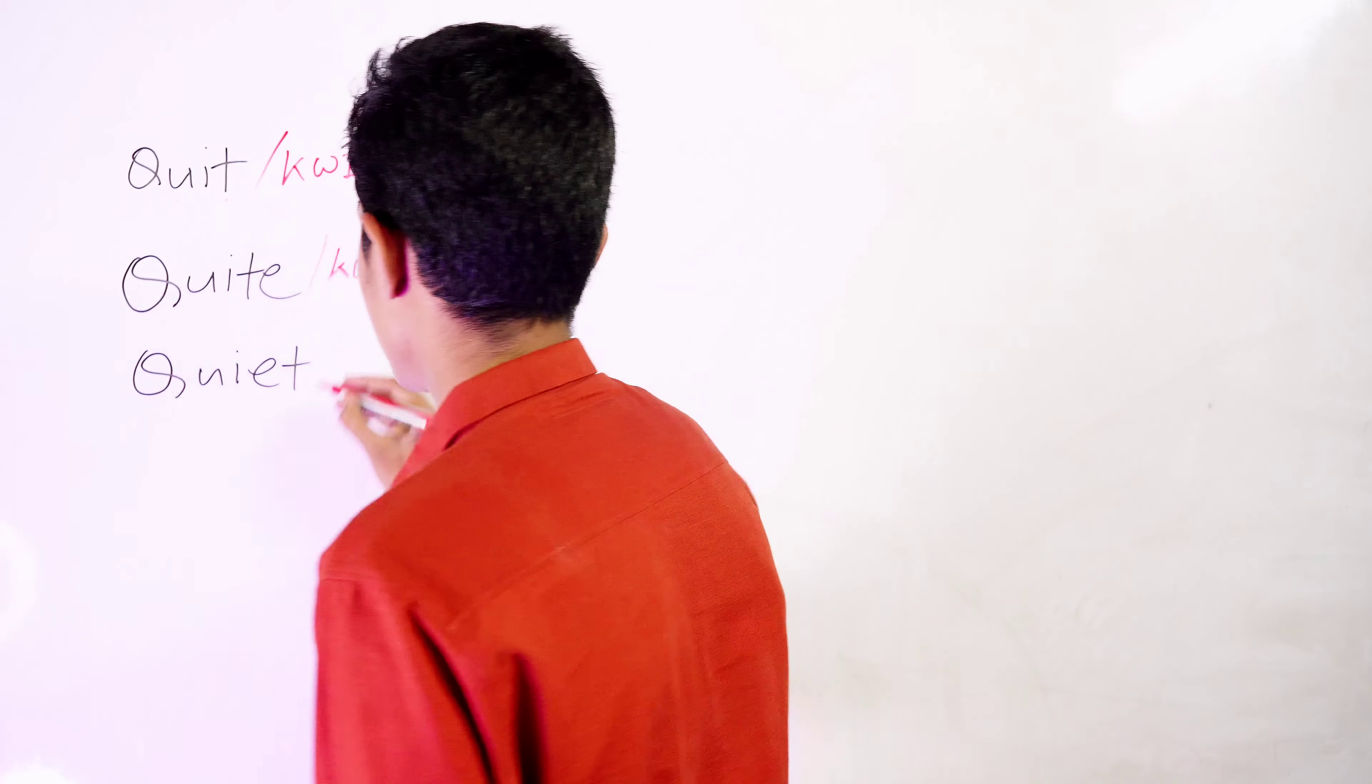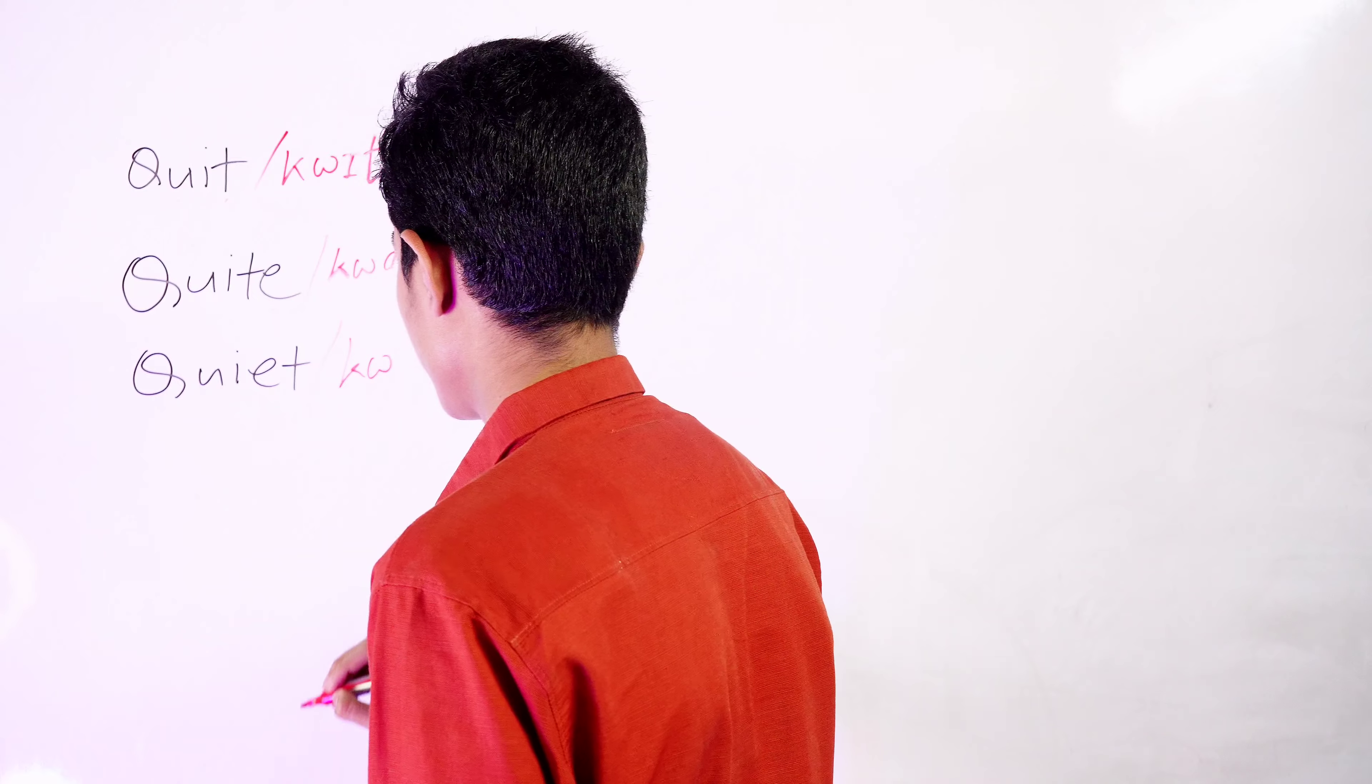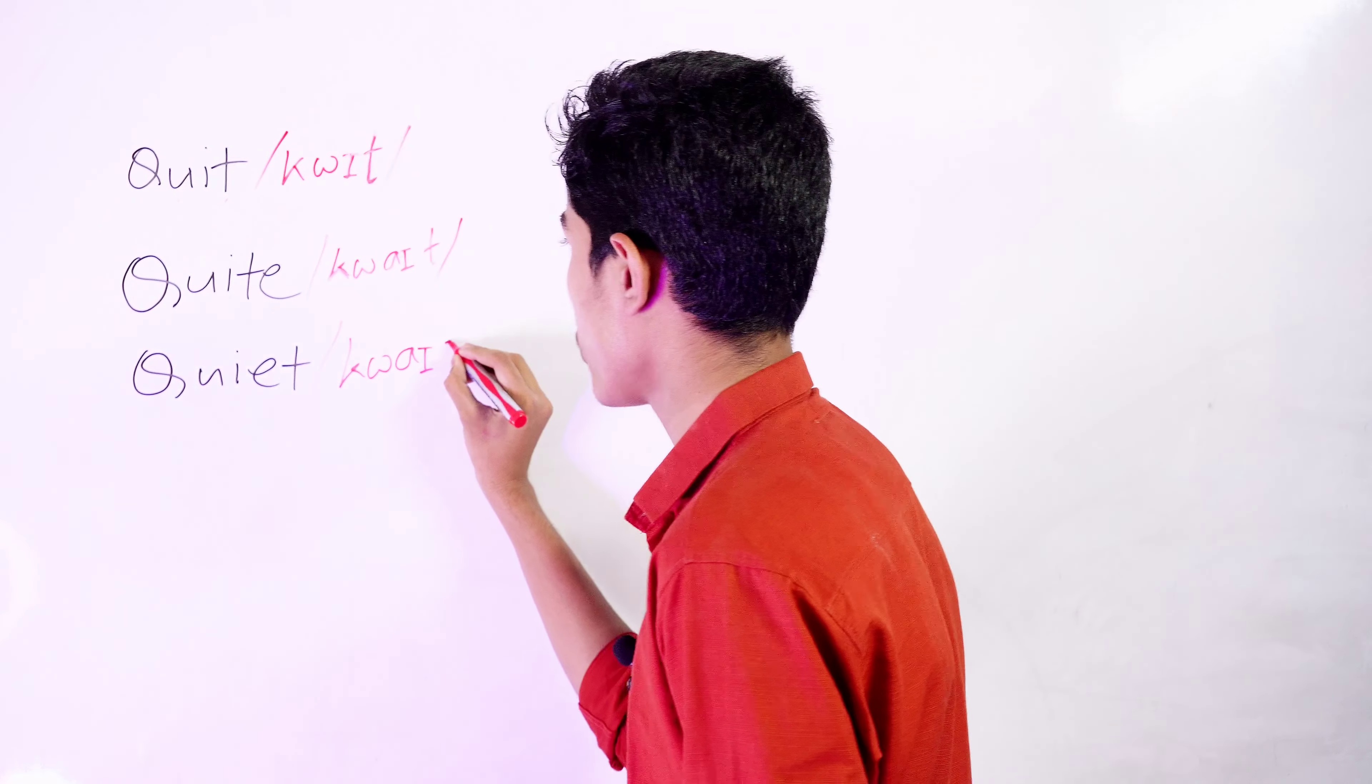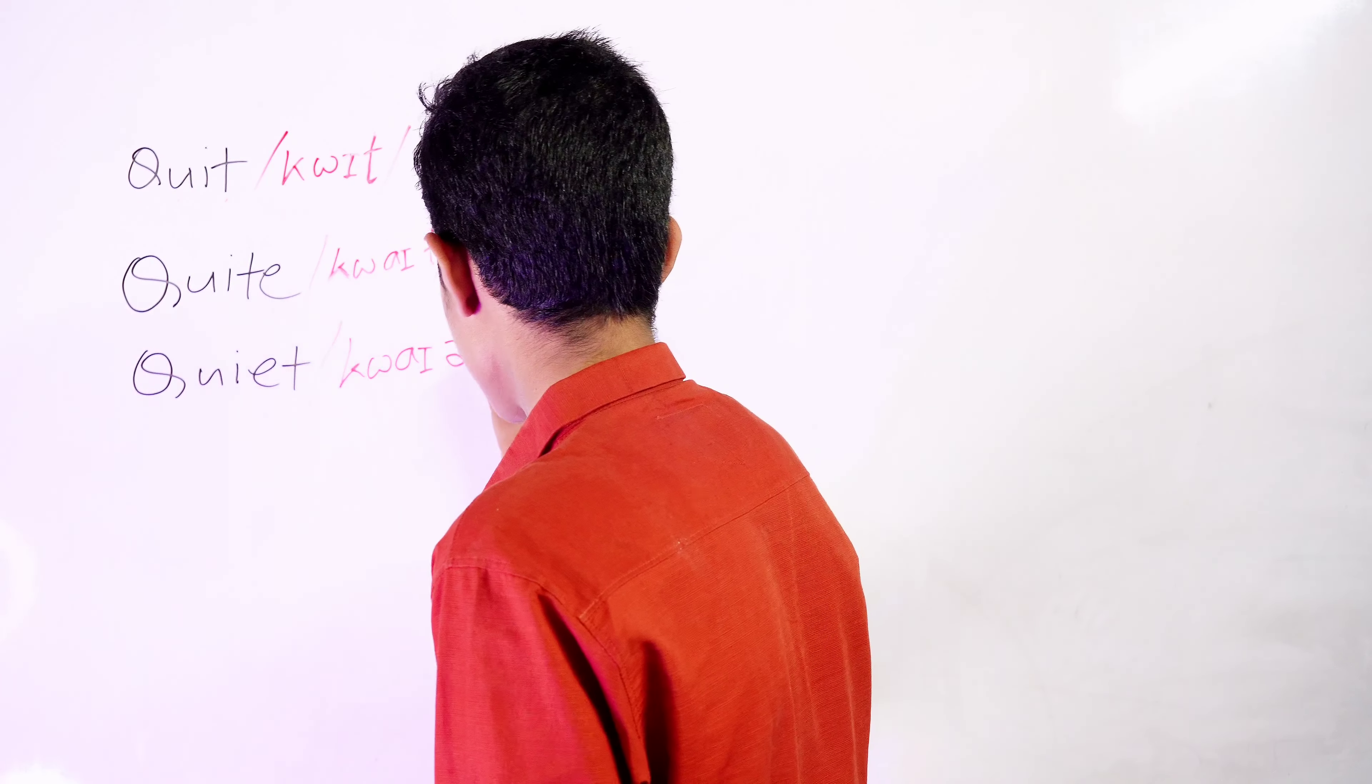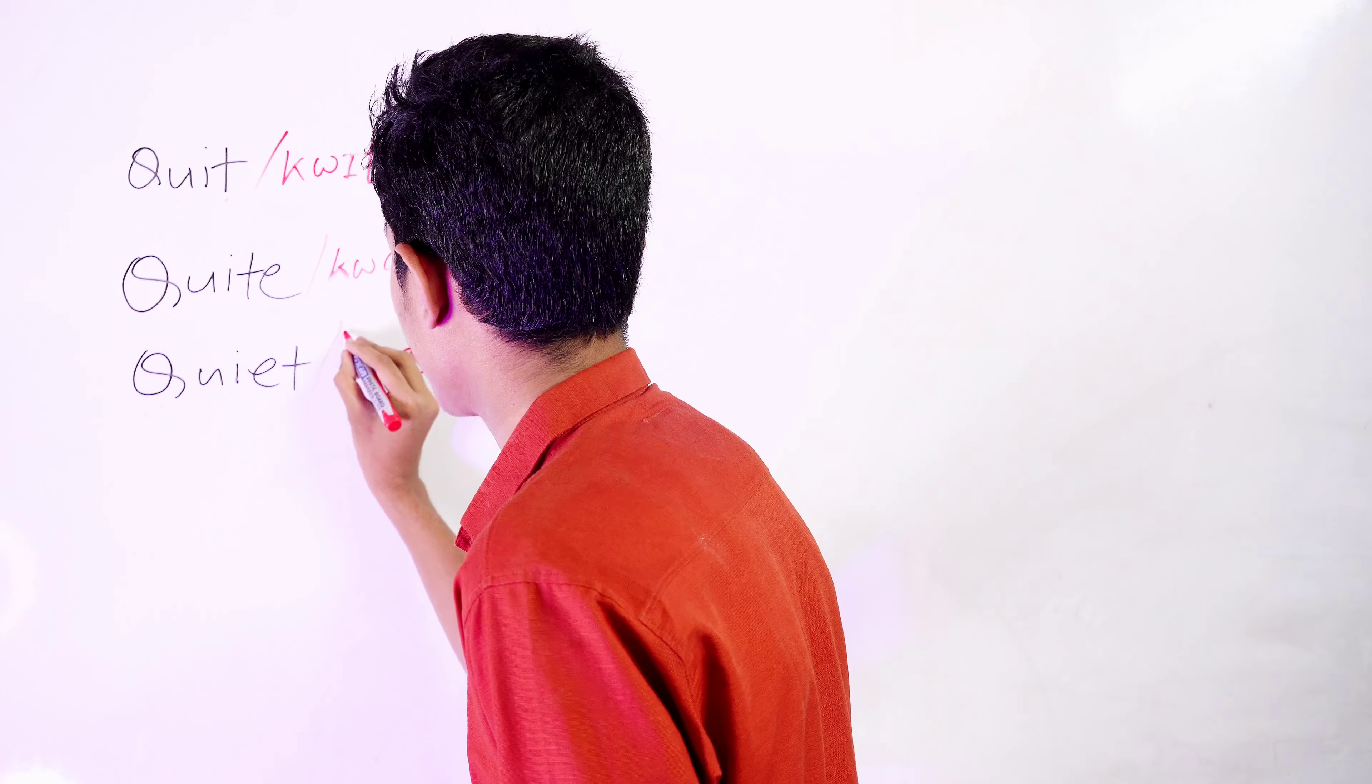Like before, the word starts with the QUA consonant cluster, then the I diphthong, and there's a schwa. The schwa is the most neutral sound in English, and it ends with T. The stress is on the first syllable. Quiet.